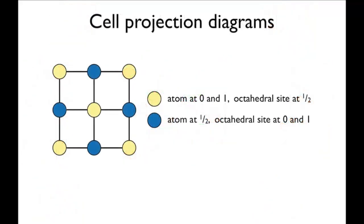Another way of looking at the interstitial sites is to use cell projection diagrams. These are two-dimensional representations of unit cells, with the z-coordinate represented by a number from zero at the bottom of the unit cell to one at the top.